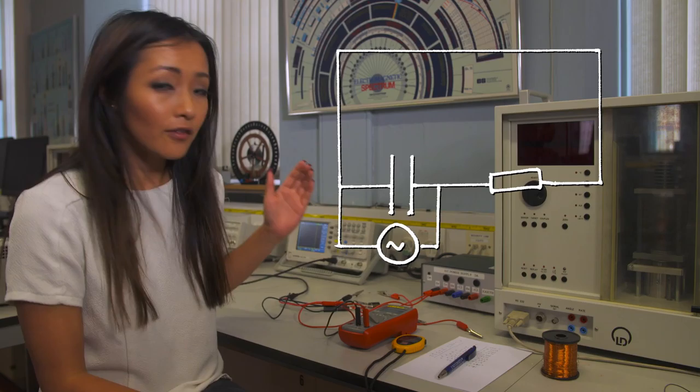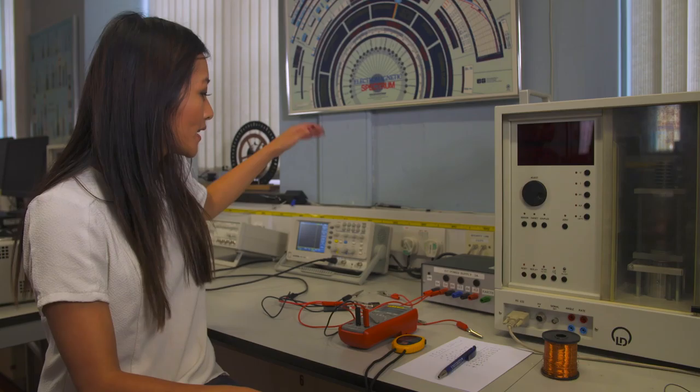Instead of using a voltmeter to measure the voltage, we're going to measure the voltage across the capacitor with an oscilloscope. The oscilloscope plots voltage against time on this screen.